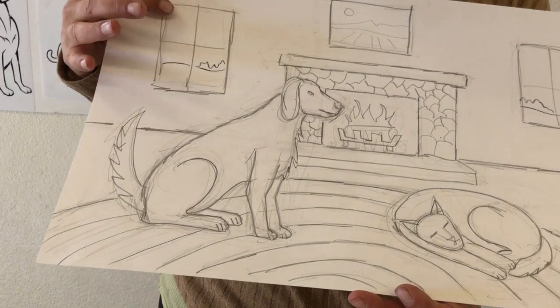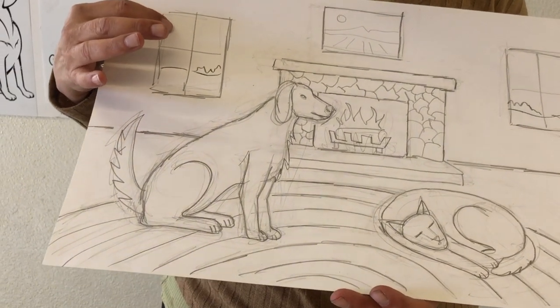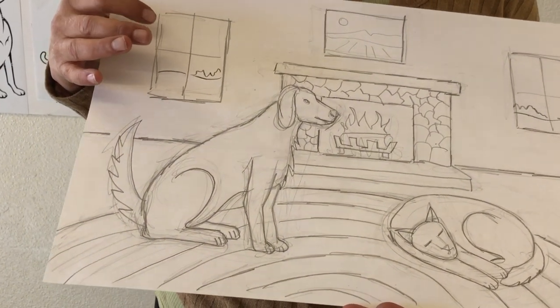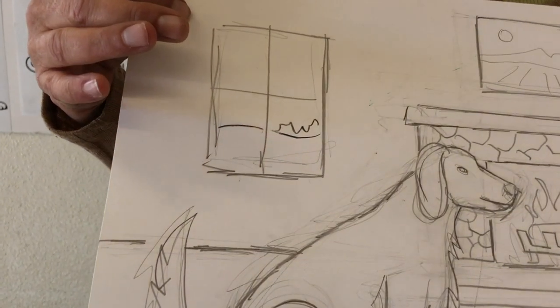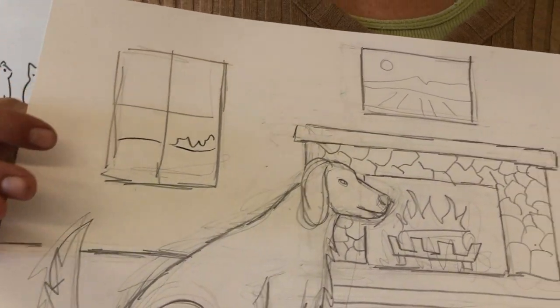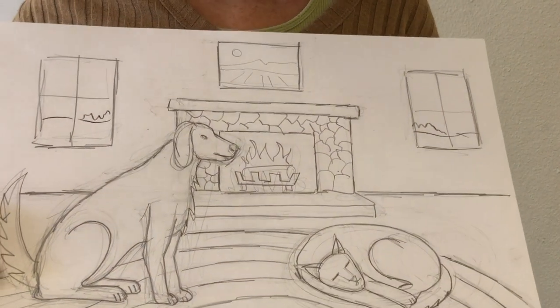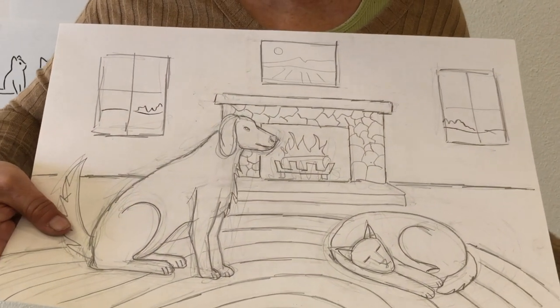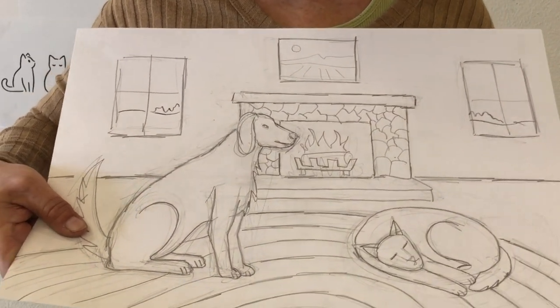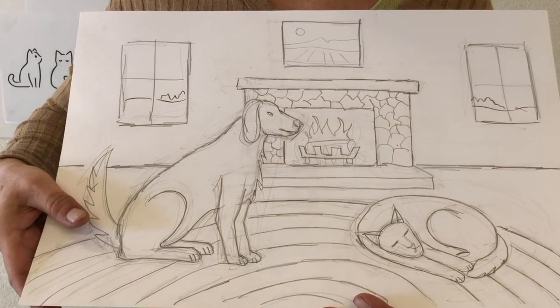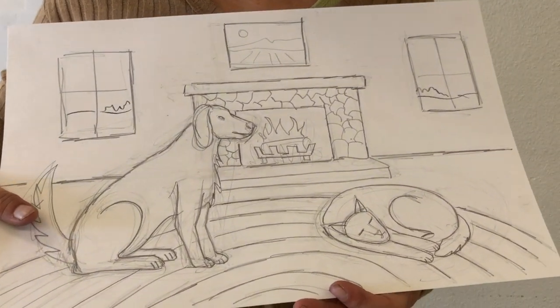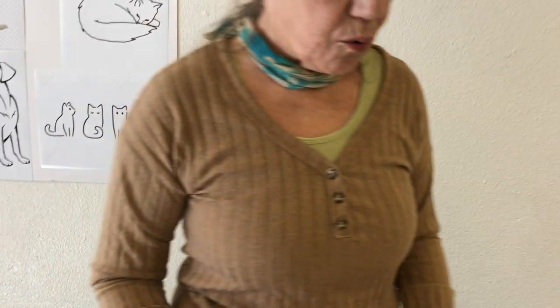I have windows in here, but remember, when you put windows you can't leave them empty — you've got to put some sort of landscape there behind them. And I have to remember my dog is going to be bigger than my cat, so when I'm drawing my animals I can't make my cat be like the mountain lion. So I'm going to show you step by step how to draw a cat sleeping and a dog sitting.